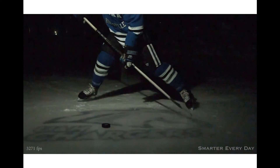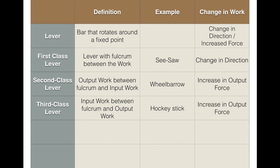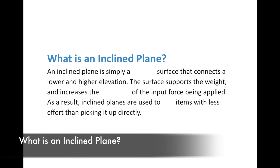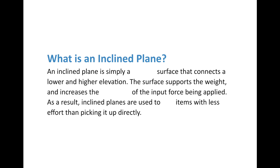For a third class lever, the input work is in between the fulcrum and the output work. A hockey stick is a great example, and it increases the output force. The further away the output force is from the input force — or the closer the input force is to the fulcrum — the even faster the output. For example, a golf swing has a great deal of output force compared to even a hockey stick.